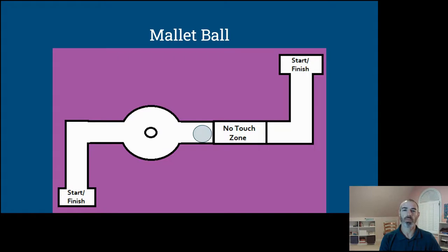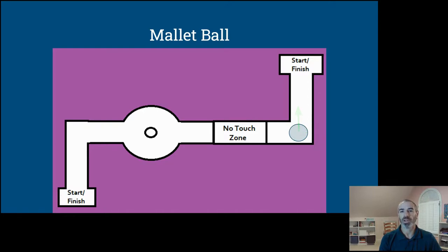At this point, we can probably apply a little more force as it approaches the no-touch zone, because once it gets there we can't touch the bowling ball — so we need to hit it hard enough to make sure it gets through. Once it exits the no-touch zone, we have the same challenge: it's moving to the right, but we want it to move up, so we stop it and start it again to finish the course. Then we hand the mallet off and navigate the course the other way using another person.